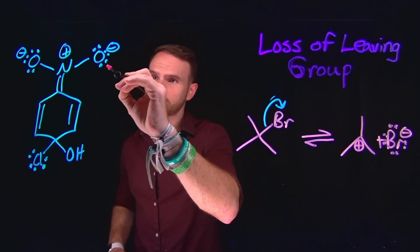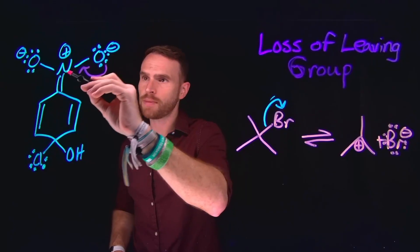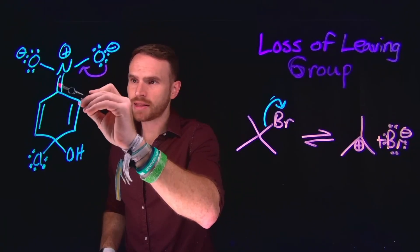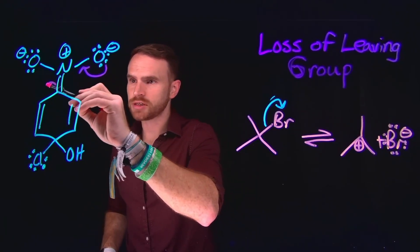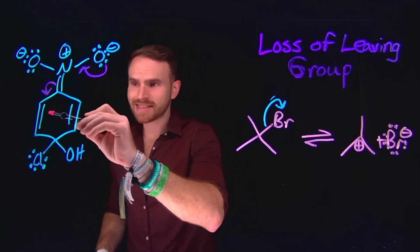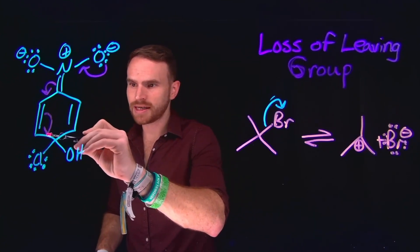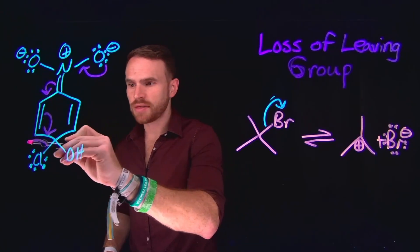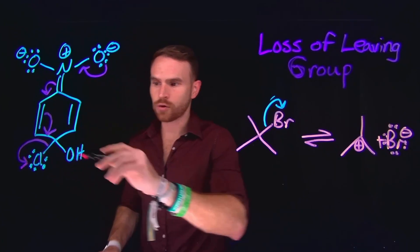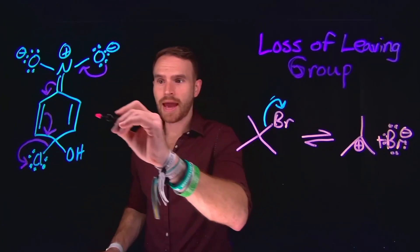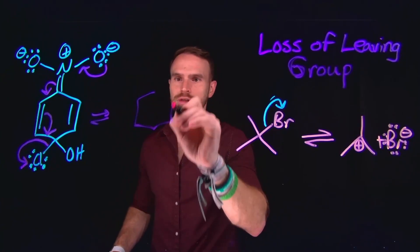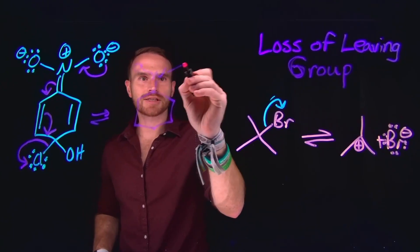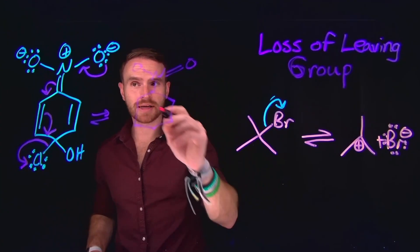Consider this example where you have electrons on oxygen which can move down to form a new double bond between nitrogen and oxygen. The flow of electrons is going to cause the pi electrons between carbon and nitrogen to move down, which is going to result in a cascade of electrons moving from this pi bond into this carbon-to-carbon bond. Subsequently, that is going to cause the chlorine leaving group to kick off, leaving behind a chloride ion.